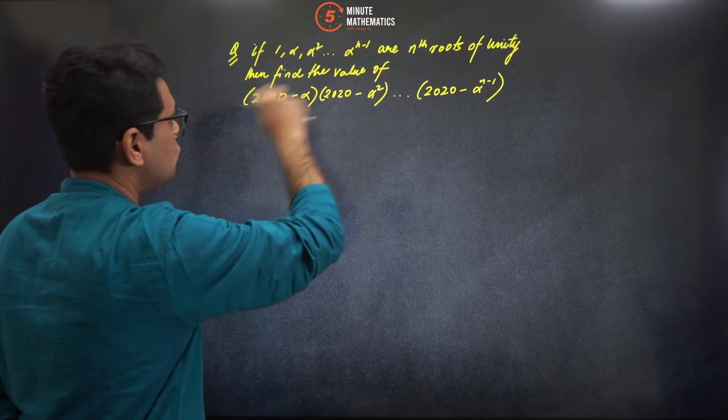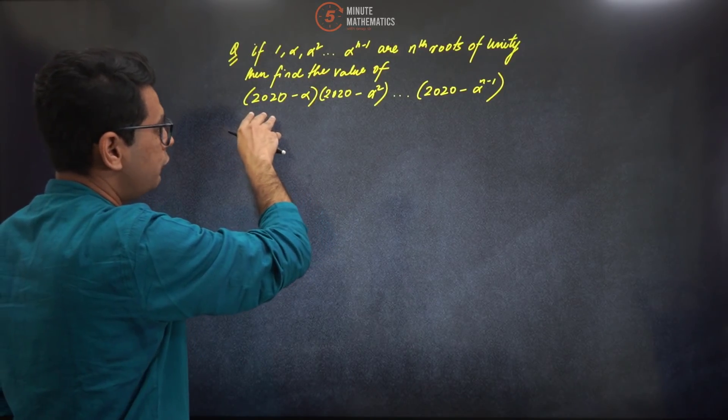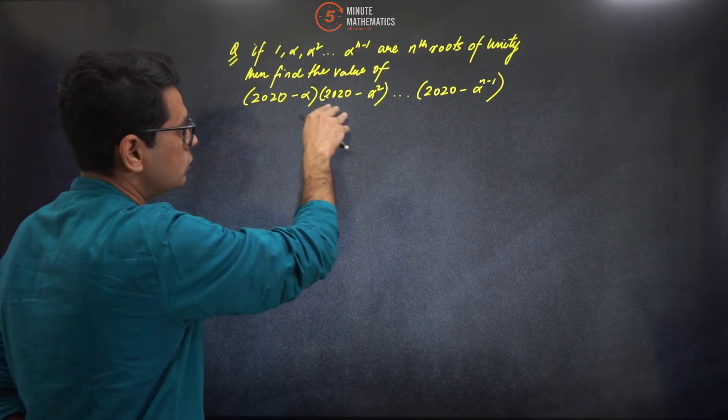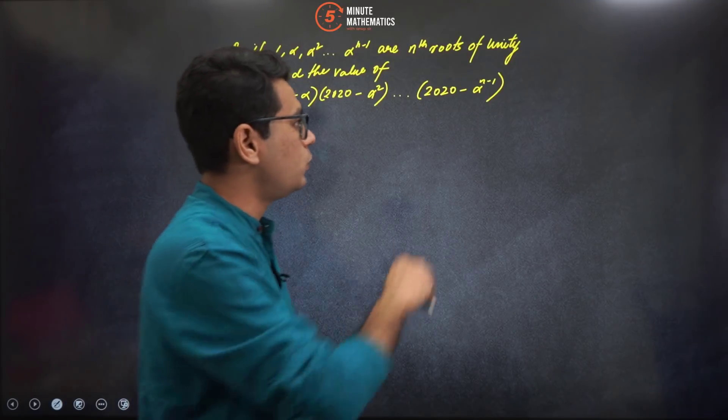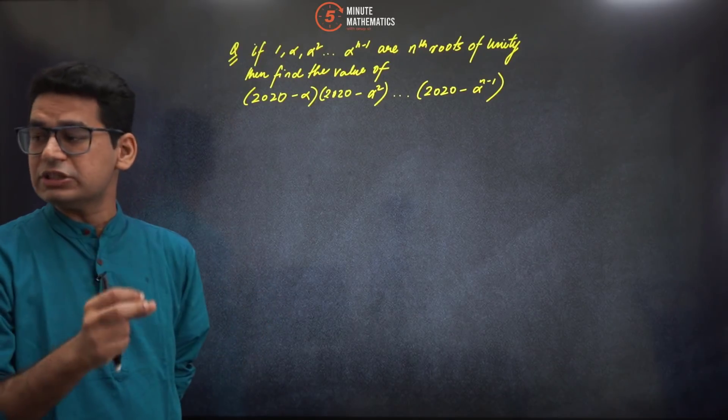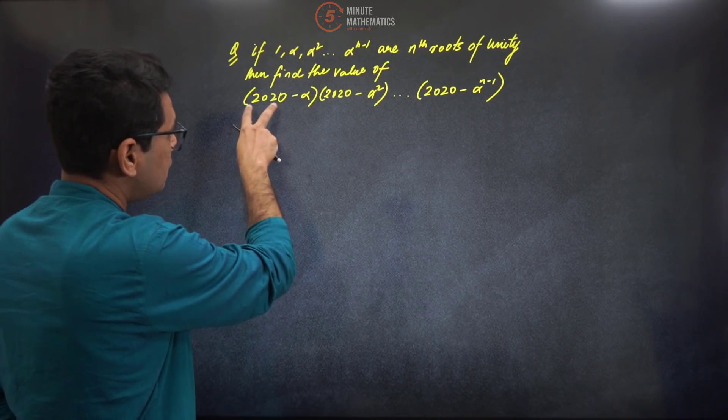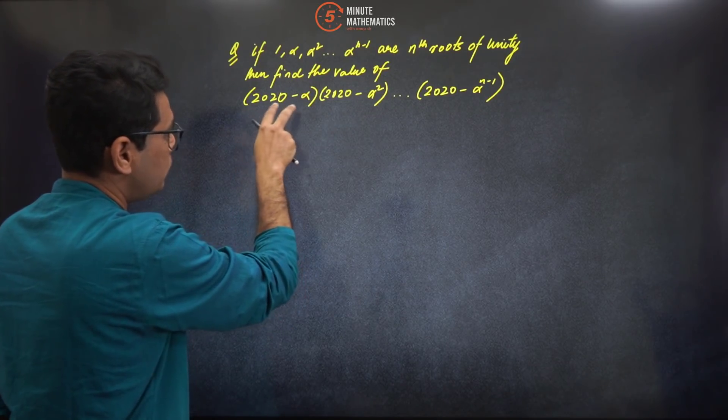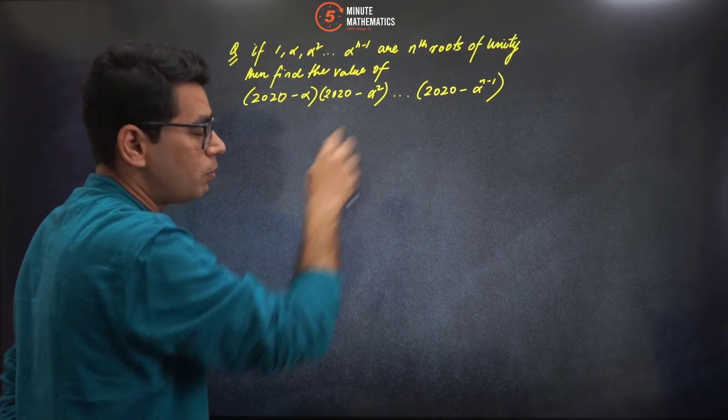Let's see how the question can be asked. The question says: if one, alpha, alpha square, alpha raise to power n minus one are nth roots of unity, then find the value of (2020 minus alpha)(2020 minus alpha square) up to (2020 minus alpha raise to power n minus one). Looks like a very difficult problem - how will this be solved? If I start multiplying all these terms...